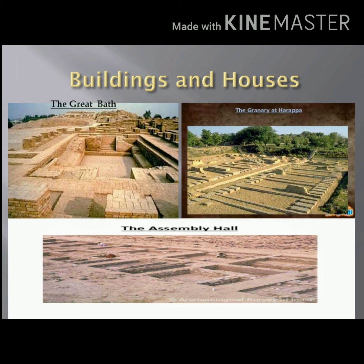Now we will discuss about the third feature, buildings and houses. Do you know, the cities of Mohenjo-daro and Harappa were divided into two parts. Part 1 of the city was built on a raised ground and it was called the citadel. Part 2 was built at a lower level. The citadel had large buildings on it.